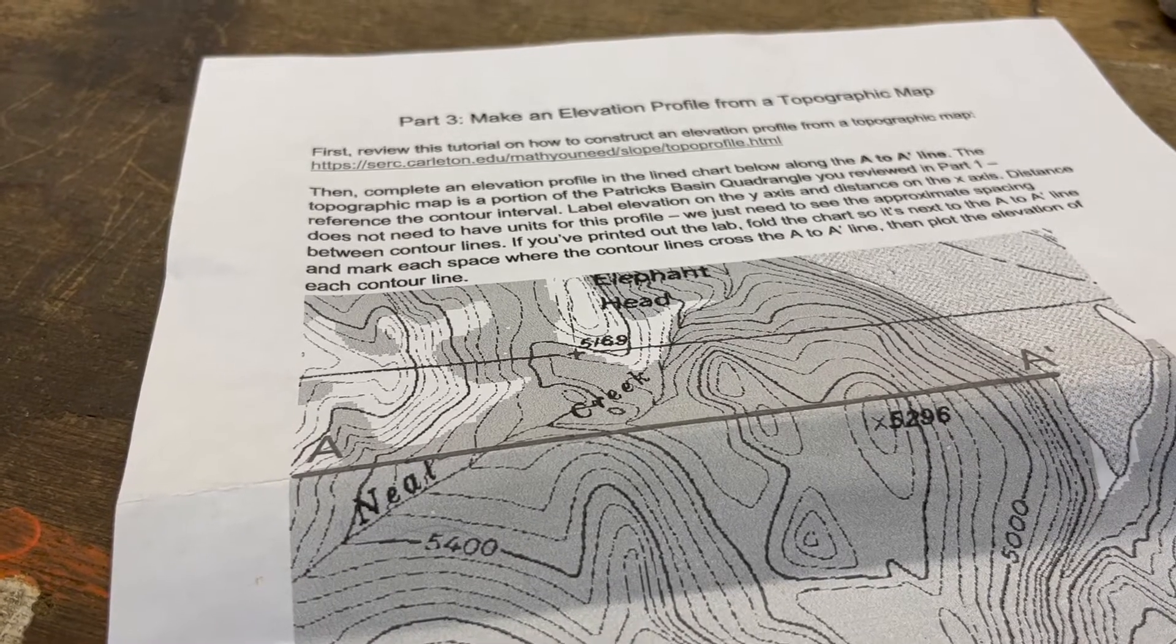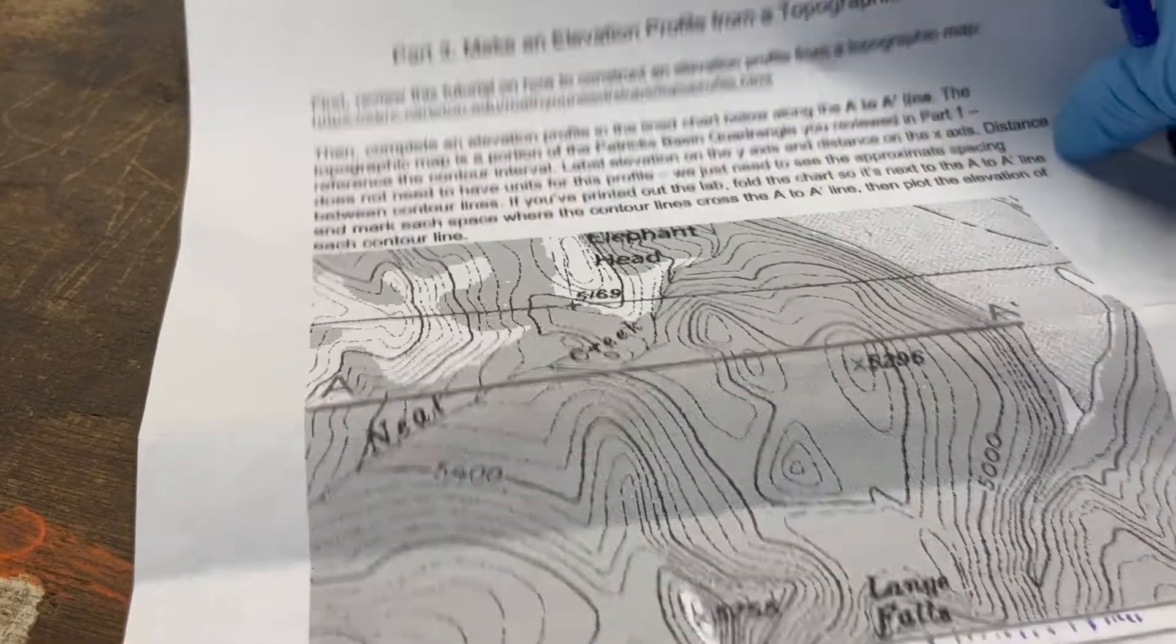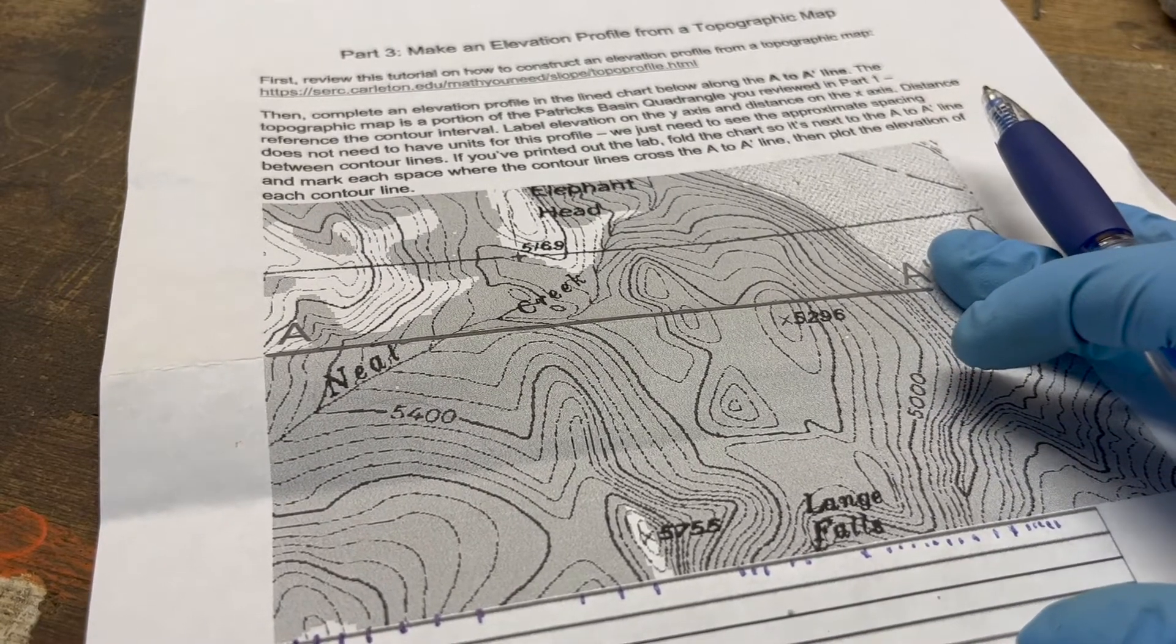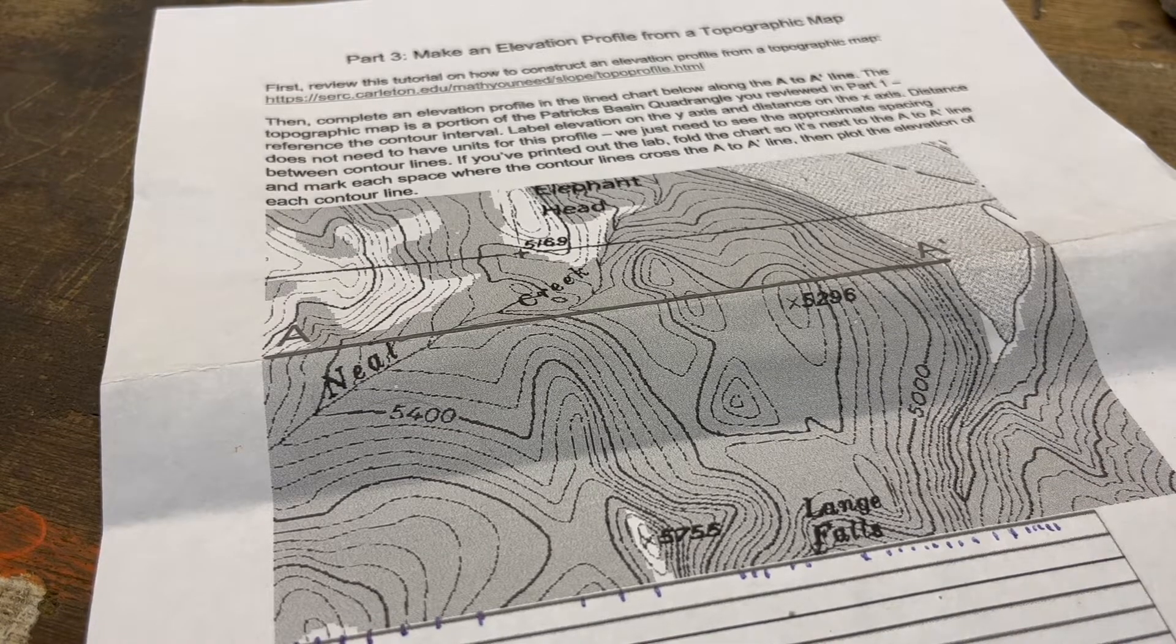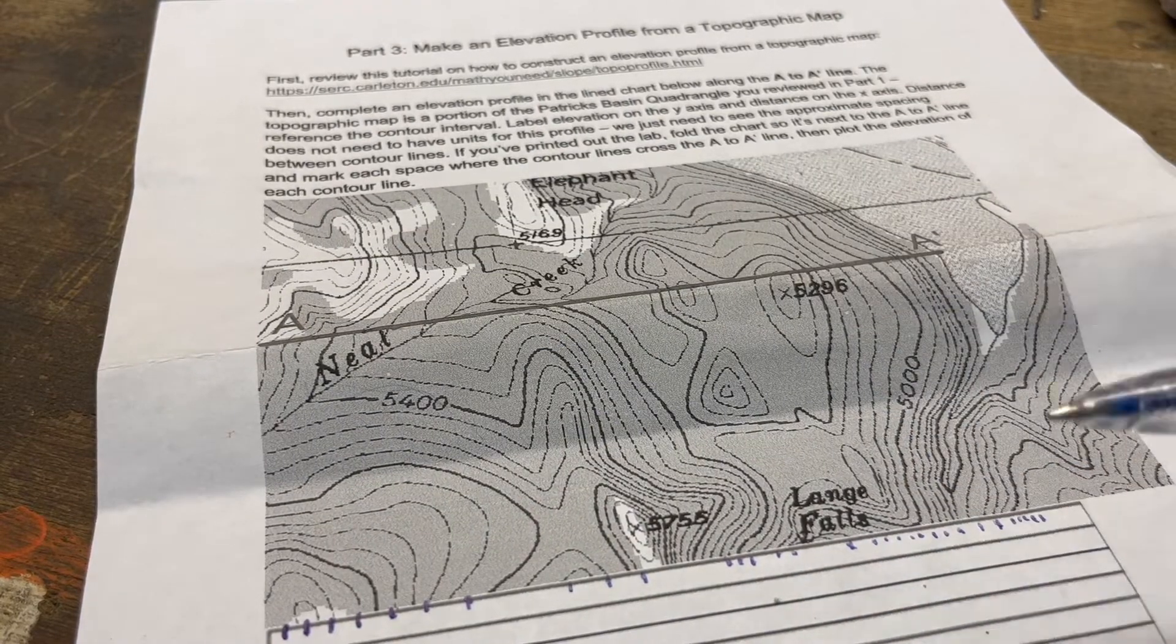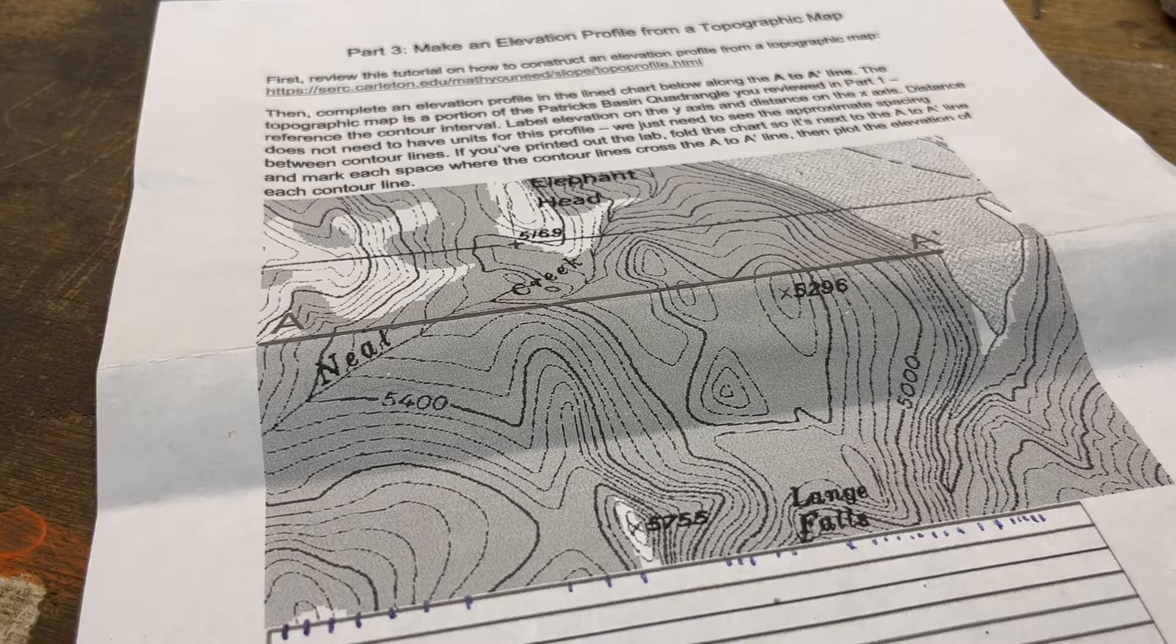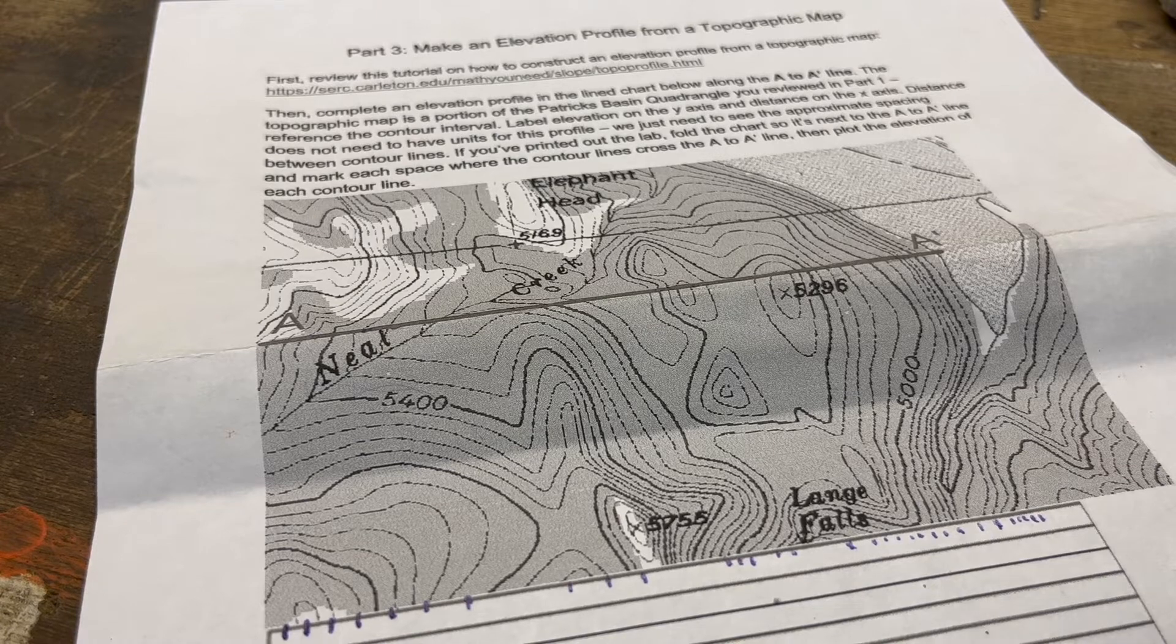We're making an elevation profile from that same Patrick's Basin quadrangle. I did explain in an earlier video how to look at the PDF, but there's some benefit to working with paper if you can. What we're looking at is a line that I drew from A to A prime just kind of arbitrarily. You take that line and basically what we're doing is we're slicing the map and we're going to use the contour interval and the contour lines to create an elevation profile.